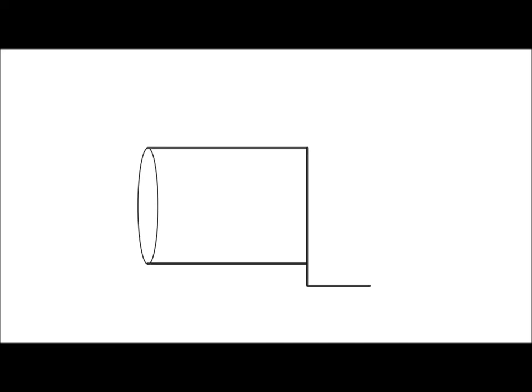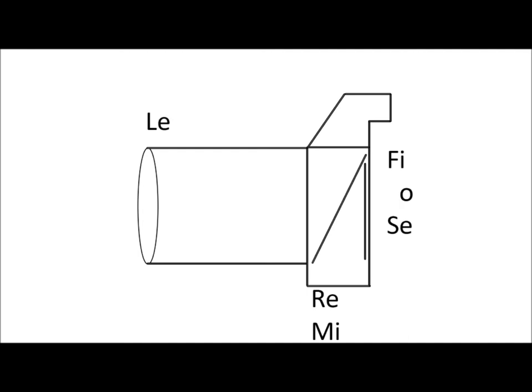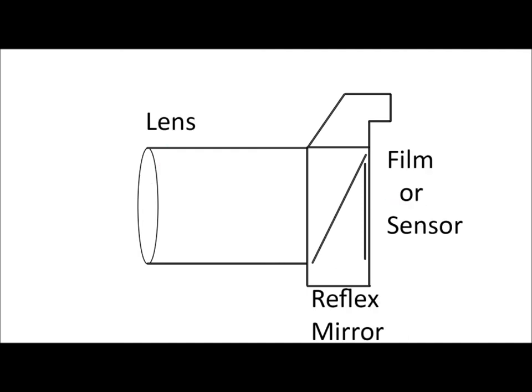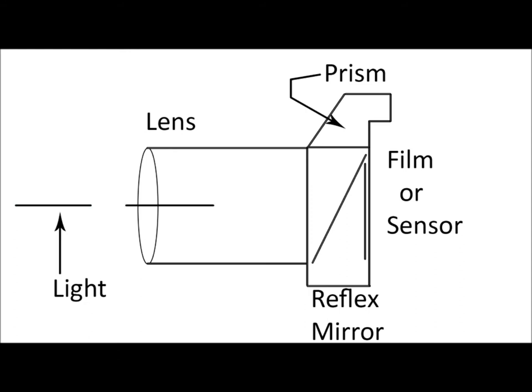Single lens reflex cameras allow users to see what the image media will see when the shutter actuates. Light enters the lens and is focused to the film plane.